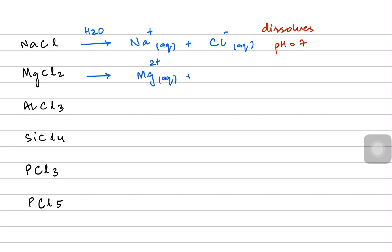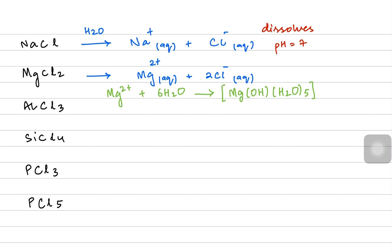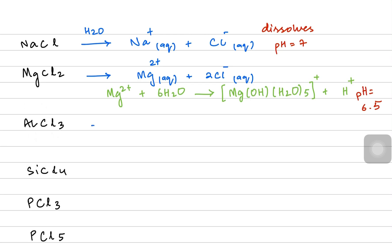The magnesium ions form a complex by receiving lone pairs from the water molecules in the solvent. One hydrogen ion is released for every magnesium ion, which is why the solution becomes slightly acidic with a pH of almost 6.5. So magnesium chloride is not exactly a neutral salt.